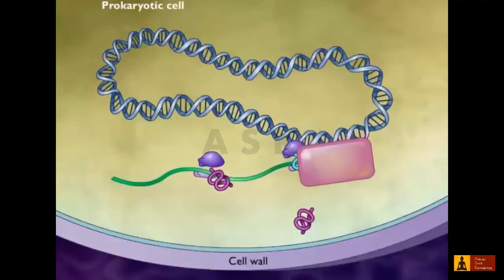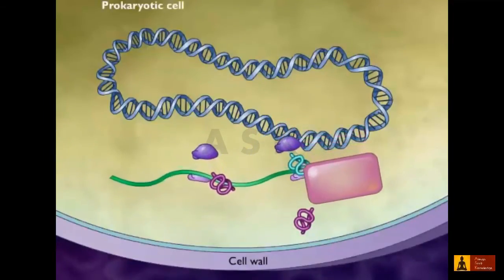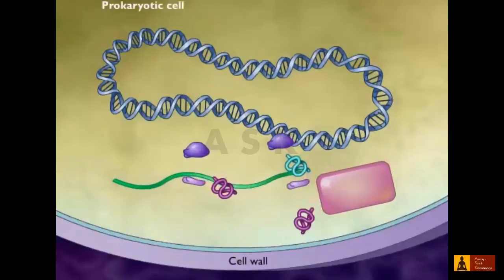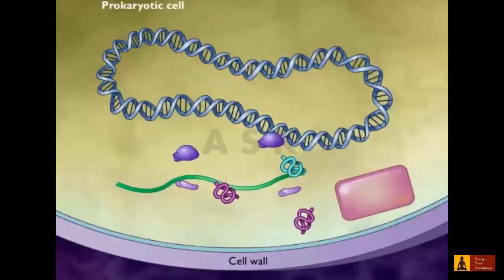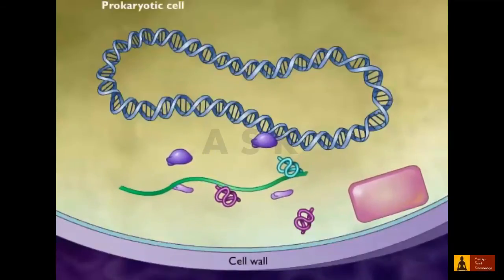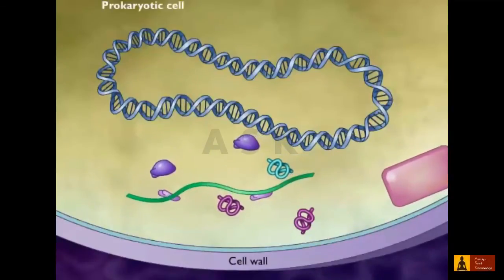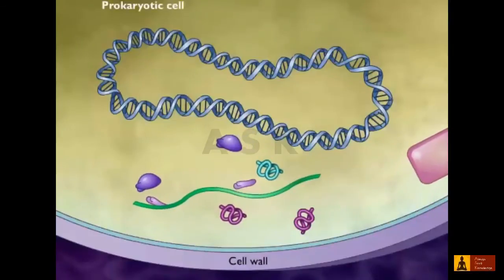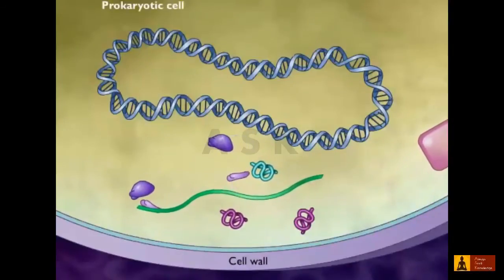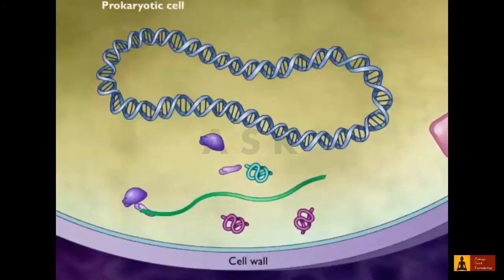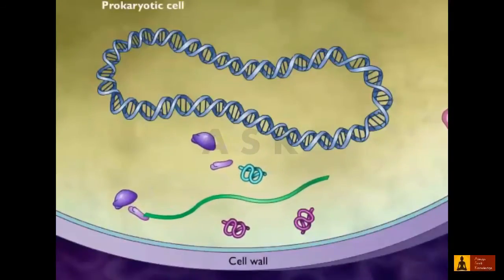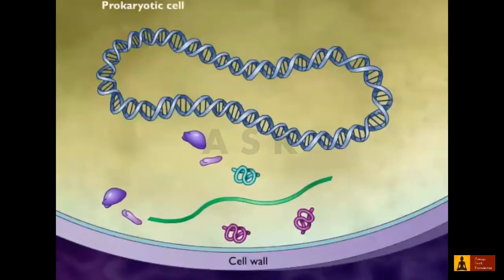Individual bacterial mRNA molecules often contain transcripts of several genes. By placing genes with related functions on the same mRNA, bacteria coordinate the synthesis of these proteins. These clustered genes are referred to as an operon.